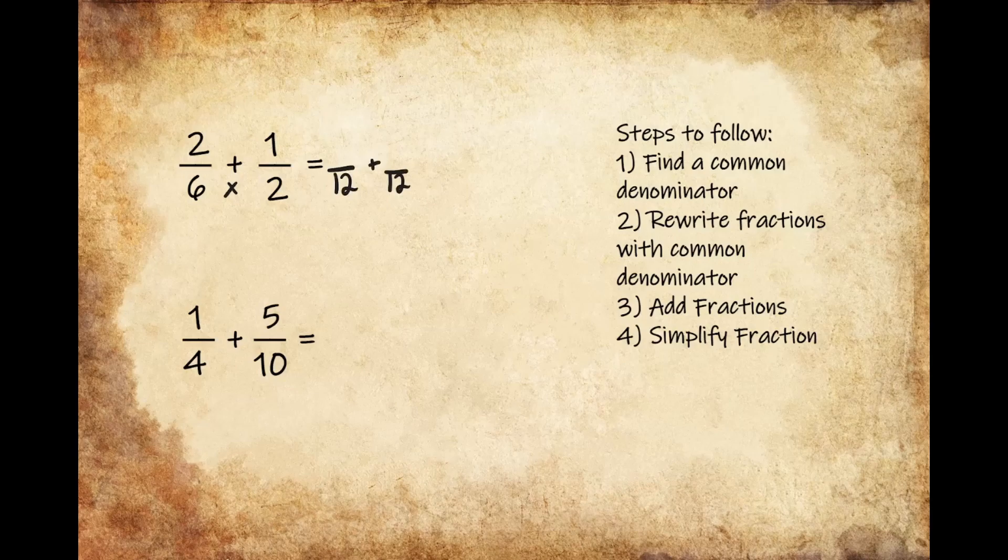Now that we have our new denominators that we've multiplied, we need to make sure that we're multiplying our numerators by the same value as our denominator. For 2/6, I had to multiply 6 times 2 to get 12, so I need to multiply the numerator by the same value of 2.